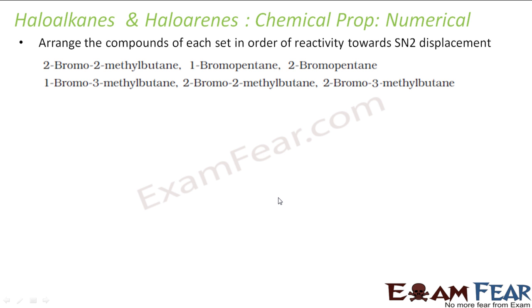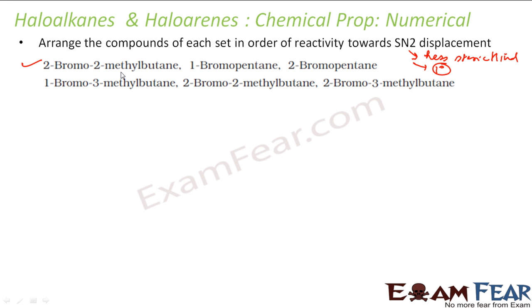For SN2, what we need is a strong nucleophile and less steric hindrance — 1° carbon is better. With those conditions in mind, let's look at the first set: 2-bromo-2-methylbutane.